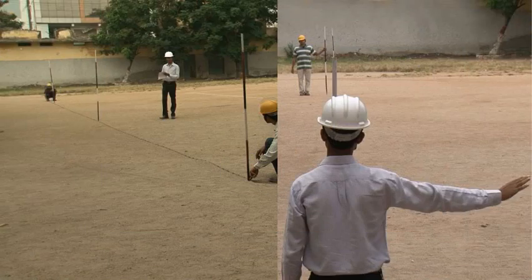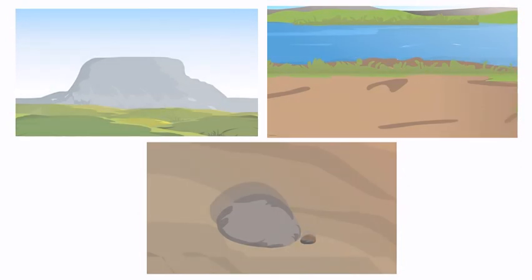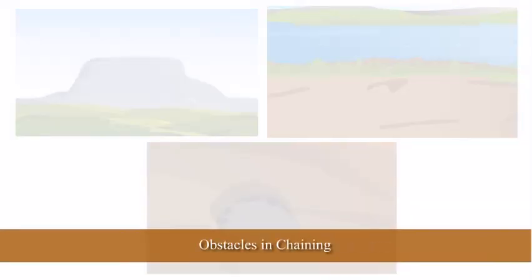You have seen that chaining and ranging are basic methods of finding out distances and relative positions of objects on the ground. Sometimes, you might find some obstacles on the ground which prevent you from carrying out ranging or chaining freely. How can you calculate distances and positions despite these obstacles? Let's find out the answer in this module: Obstacles in Chaining.